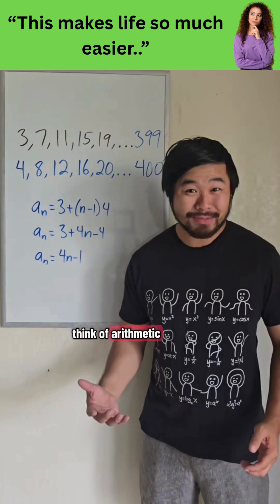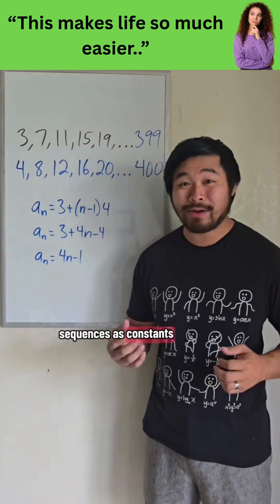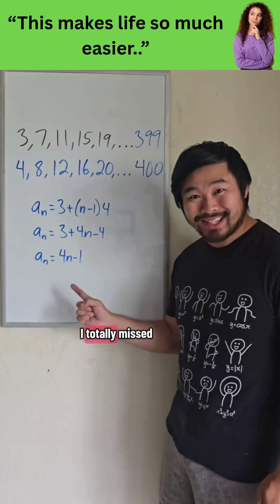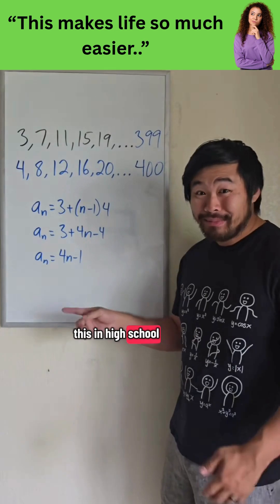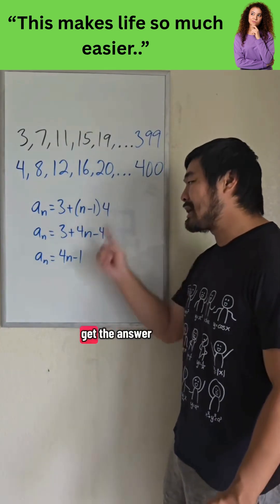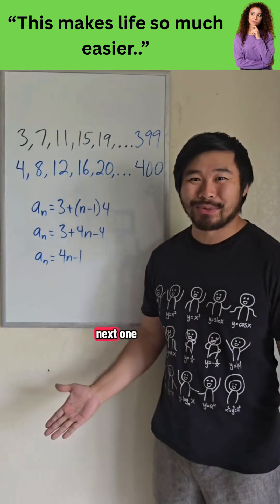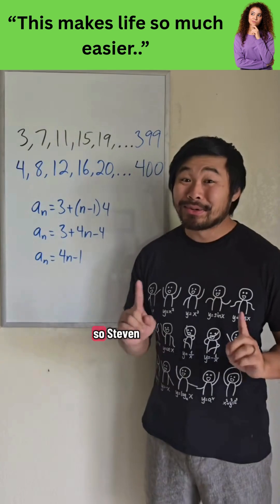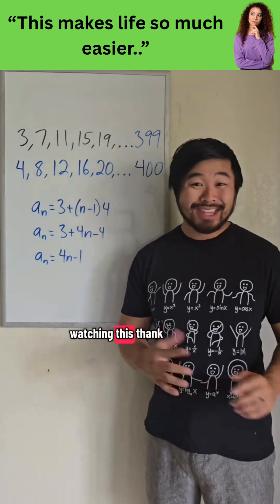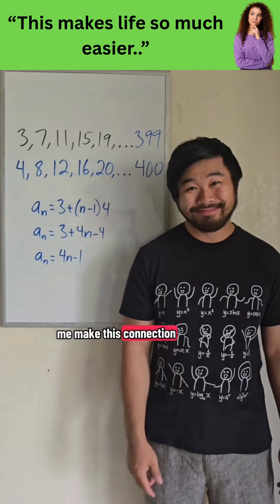I never made the connection that 4n minus 1 literally means 1 less than the multiples of 4. So we can think of arithmetic sequences as constants away from multiples. I totally missed this in high school, because all I did was just get the answer, box it, move on to the next one. So Stephen, if you are watching this, thank you for helping me make this connection.